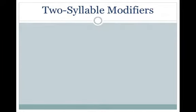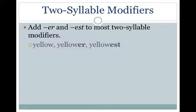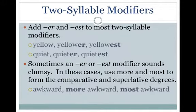For two-syllable modifiers, add ER and EST to most two-syllable modifiers. For example: yellow, yellower, yellowest; quiet, quieter, quietest. Sometimes an ER or EST modifier sounds clumsy. In these cases, use more and most to form the comparative and superlative degrees. For example: awkward, more awkward, most awkward.